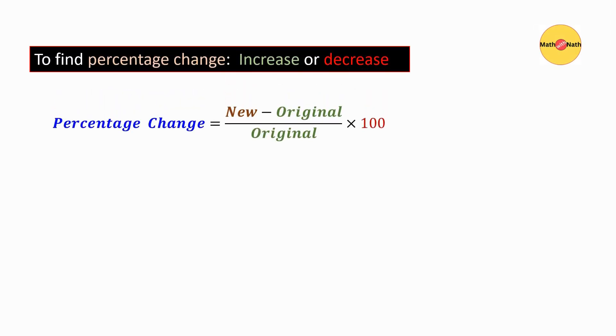To find percentage change — increase or decrease — the percentage change can be found using the formula: percentage change equals new minus original, over original, times 100.